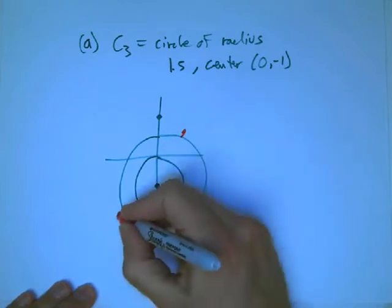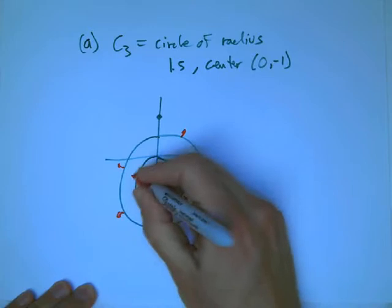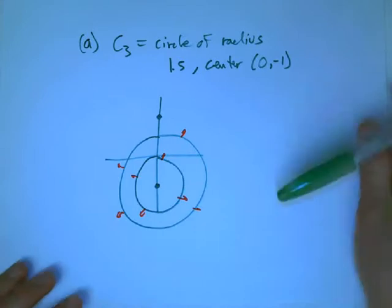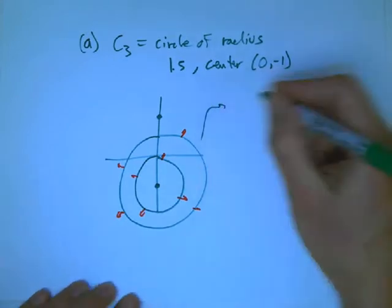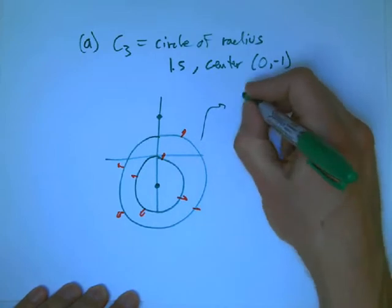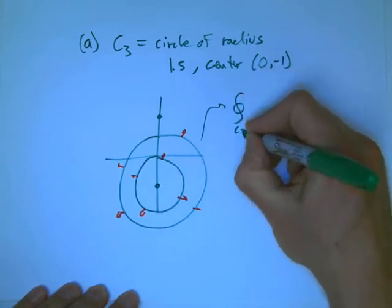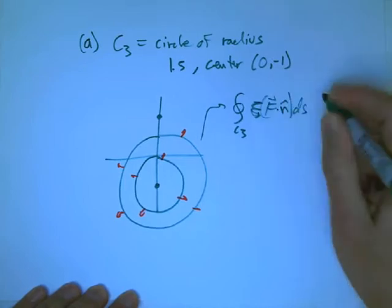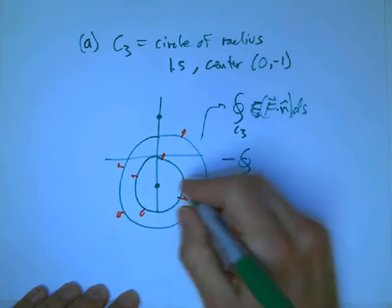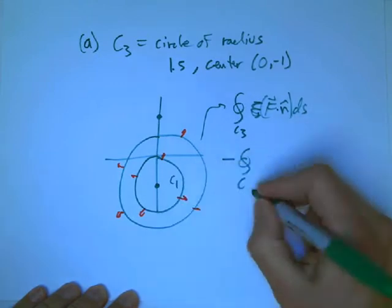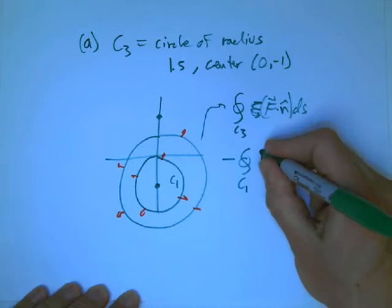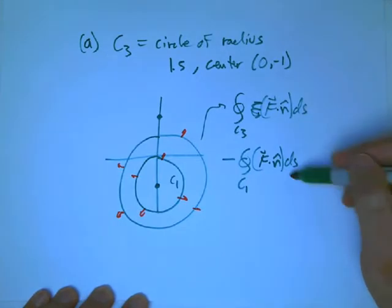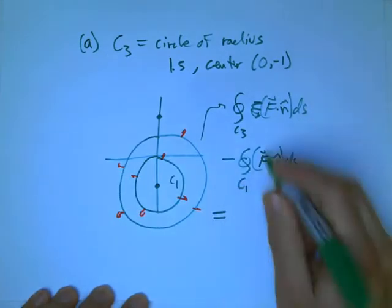So I want to know how much flux is flowing out of this guy, but I know how much is flowing out of this guy. Again, the region in between is something on which Green's theorem applies. So let me do this one carefully because I want to make sure you guys know how to write this down carefully.